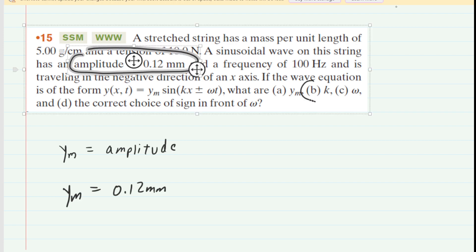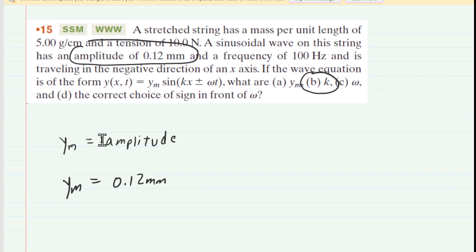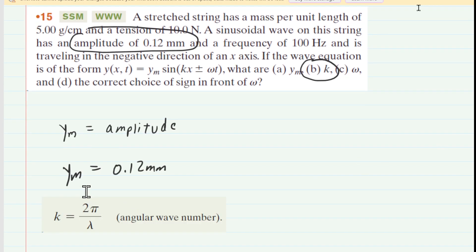In part B of the question, we are asked to determine the value of k, which is the so-called angular wave number. Let's take a look at the equation for the angular wave number. We can see that the angular wave number k is equal to 2π divided by λ, where λ is the wavelength.